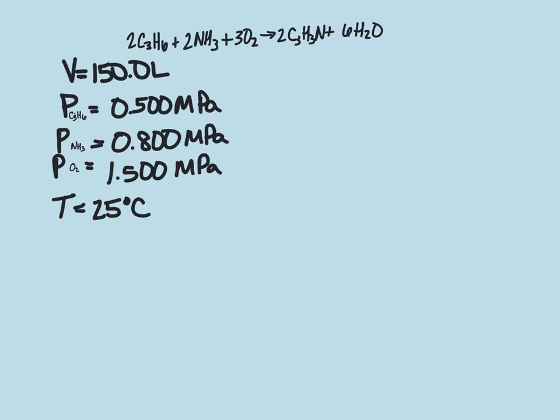The three gases have partial pressures of 0.5 megapascals, 0.8 megapascals, and 1.5 megapascals at a temperature of 25 degrees Celsius. First, we're going to convert our temperature into Kelvin, so we have 25 plus 273, which gives us a temperature of 298 Kelvin.